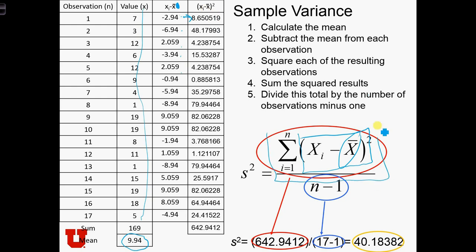The numerator of the variance is just the sum of the square deviations. So we need to add up all of these values in this final column. When we add them up, we get 642.94. That becomes the numerator of our expression. We're going to divide by n minus 1, which is 16. So we get s squared equals 642.9 over 16, and that equals 40.18.